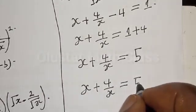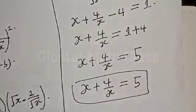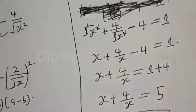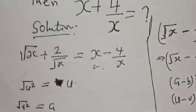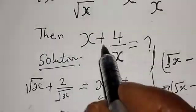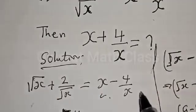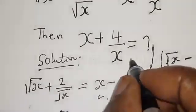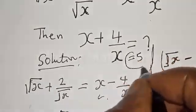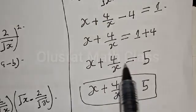Our final answer is s plus 4 divided by s equals 5. From the initial question, we were asked to find the value of x plus 4 divided by x, which is equal to 5.